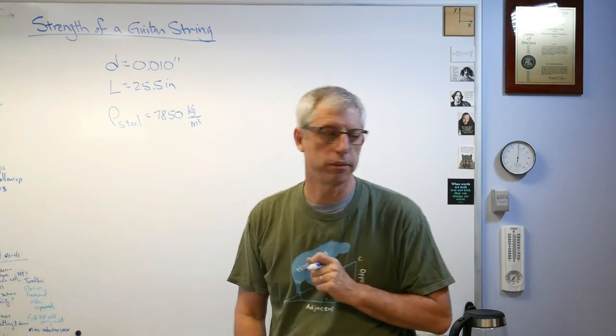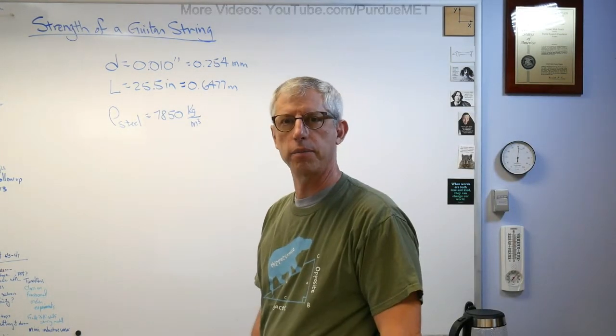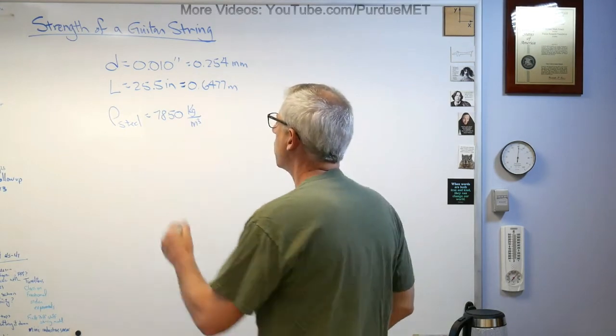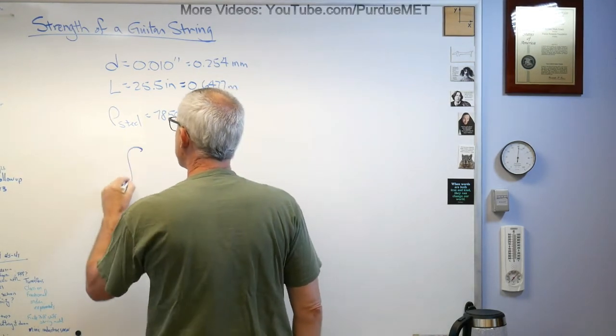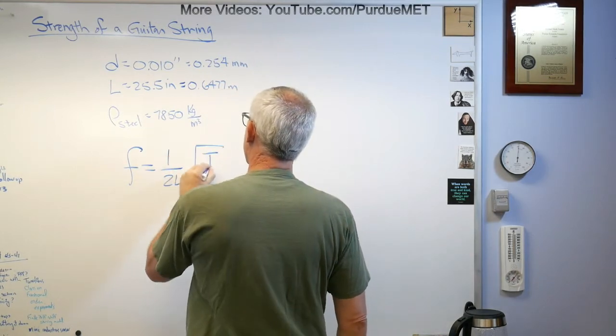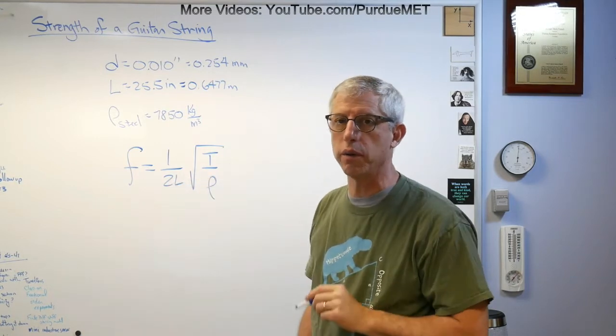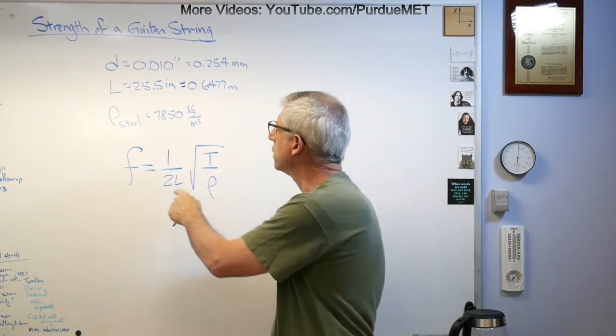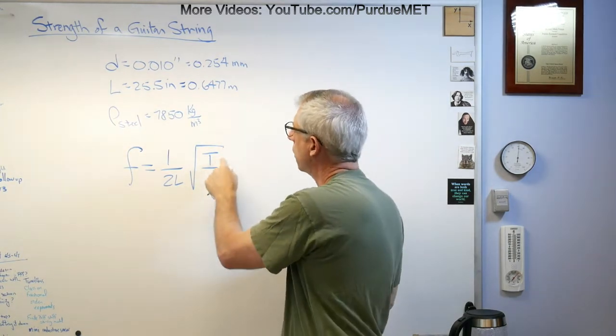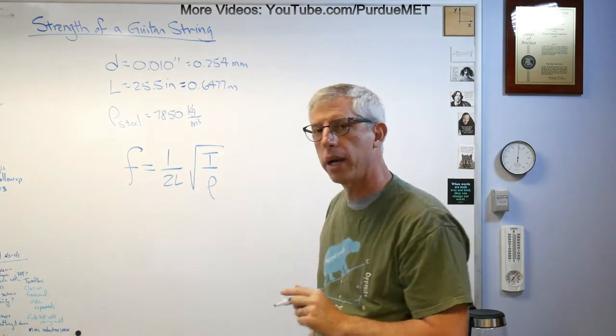So we're going to get the governing equation, and that is this: frequency of the string (this is just the fundamental frequency, this doesn't have anything to do with the harmonics) is 1/(2L) where L is the length of the string, times the square root of T over ρ. T is tension, ρ is mass per unit length.